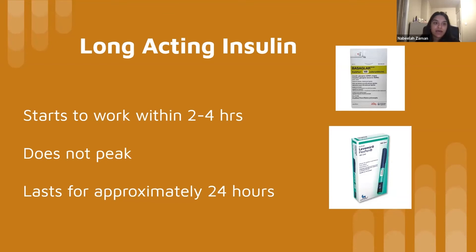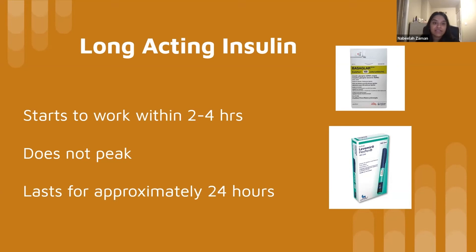Moving on to long acting insulin — it also helps stabilize blood sugar in people with diabetes and takes the longest amount of time to start working of the four types. Long acting insulin can take effect several hours after injection, usually starting to work between two to four hours. It does not have a peak time, working to regulate blood sugar levels at a fairly stable rate throughout the day, lasting around 24 hours or longer. Importantly, long acting insulin cannot stabilize post-meal blood sugar spikes, so people with type 1 diabetes often need to supplement with faster acting insulins when having a meal.